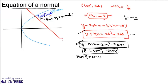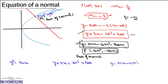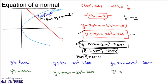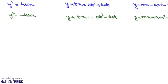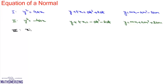To summarize: for y² = 4ax, the equation of normal is y + tx = at³ + 2at, or y = mx - am³ - 2am. For the second form y² = -4ax, we replace a with -a, giving y + tx = -at³ - 2at, or y = mx + am³ + 2am.